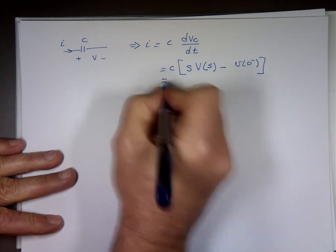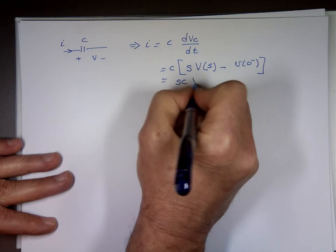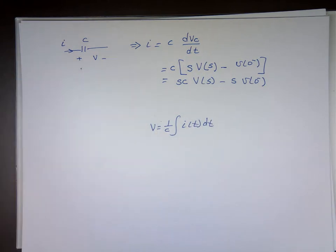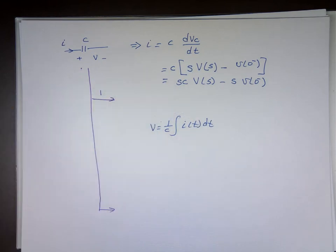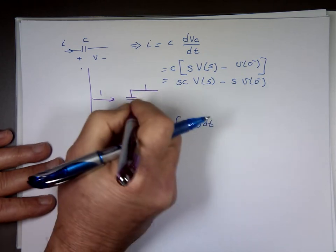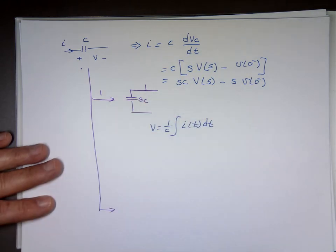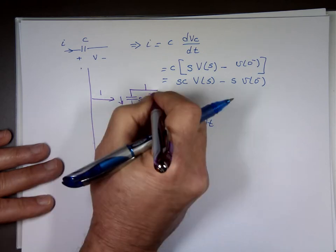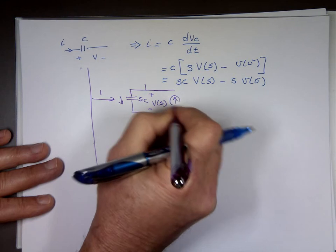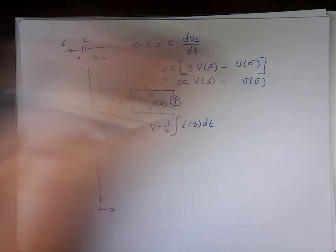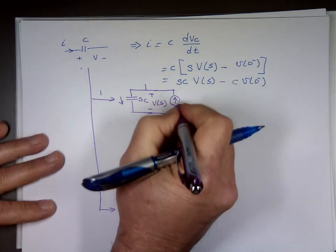That ends up being Cs·V(s) minus C·v(0 minus). So for the capacitor, option one: that's a current, so the current comes down from the node of value sC times V(s). You subtract from it, meaning the current source points upward with value C·v(0 minus). That's option one — a parallel admittance sC with an upward current source C·v(0 minus).